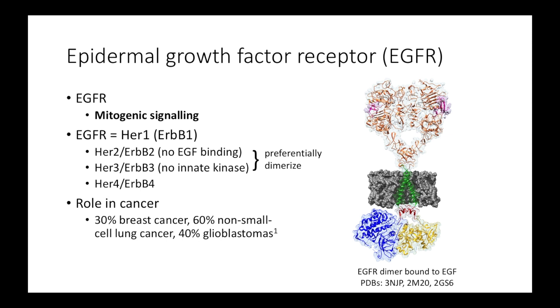The epidermal growth factor receptor, or EGFR, is involved in cell growth and differentiation. In other words, mitogenic responses via the tyrosine kinase signaling pathway. In humans, EGFR is referred to as HER1 or in other animals as ERBB1. Other members of the EGFR family include HER2, HER3, and HER4.